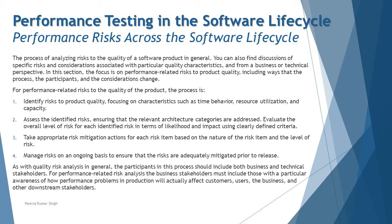Number one: identify risks to product quality, focusing on characteristics such as time behavior, resource utilization, and capacity. Number two: assess the identified risks in terms of measuring the impact and likelihood to determine the level of risk, which tells you how much effort is required to mitigate it and what mitigation steps are necessary.